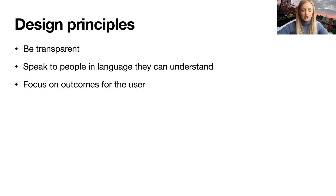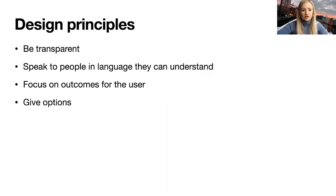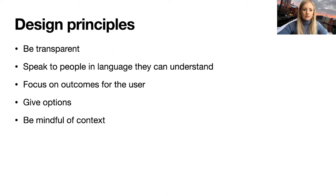Focus on outcomes for the user — don't just tell them to accept or decline. Tell them what will happen if they accept or decline and give them true choices. Give them options. Don't bundle things together where they have to consent to a lot of things they don't want in order to get one single benefit. Be mindful of context — what is the user doing when you're asking them to make a privacy decision? The closer you tie the benefit of consent with the value the data will deliver, asking in that right moment, the more likely people are to opt in.